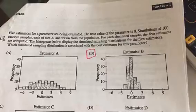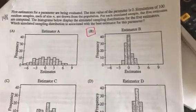It states five estimators for a parameter have been evaluated. So you can see you've got five choices here to choose from and the true value of the parameter is zero. So what is that telling us?